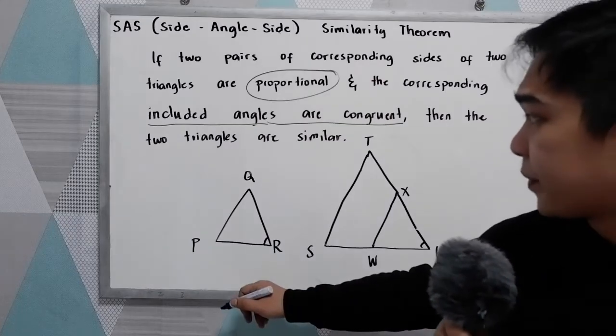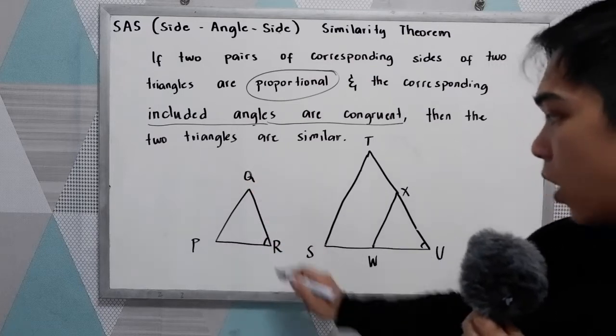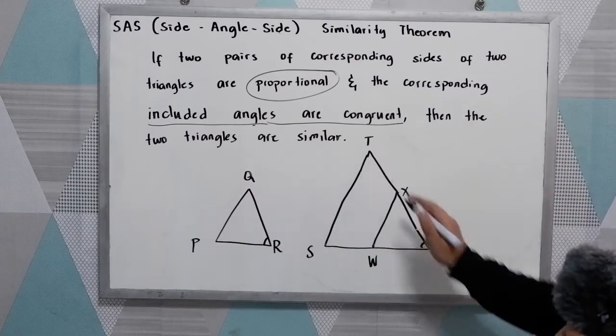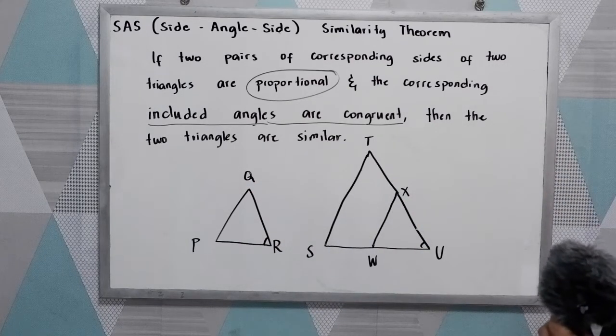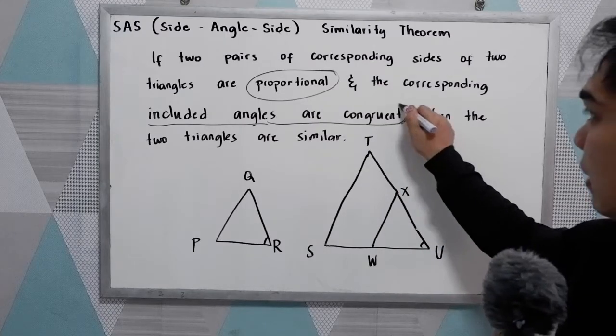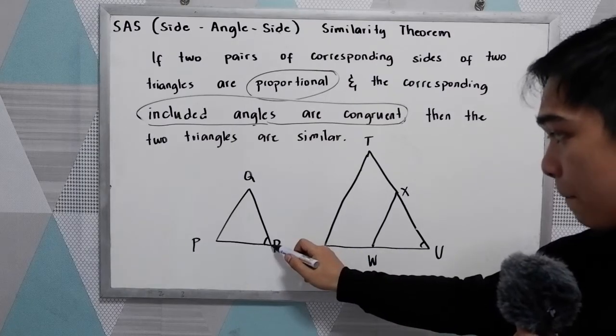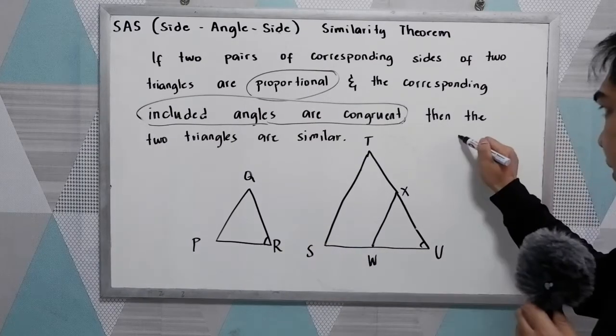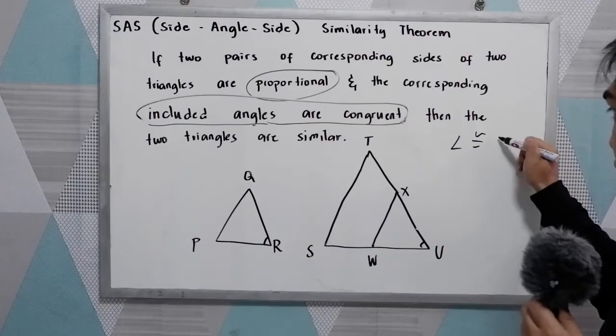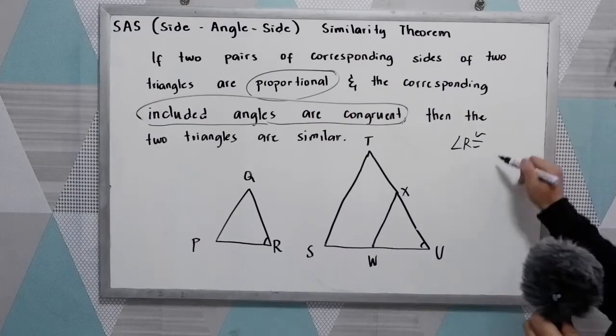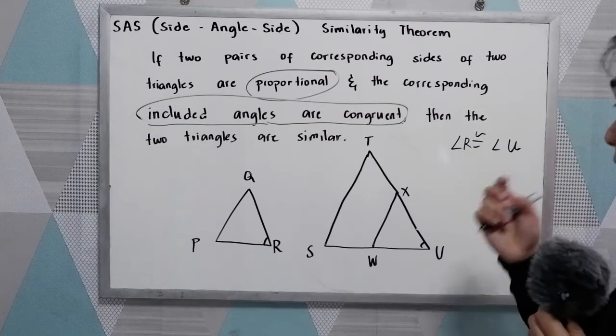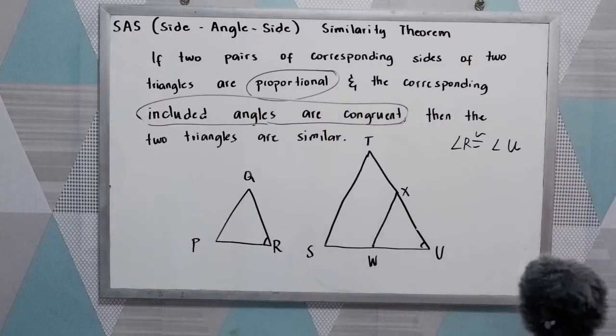let's have here Triangle PQR and Triangle STU. Now our included angles are angle R and angle U, which are congruent.